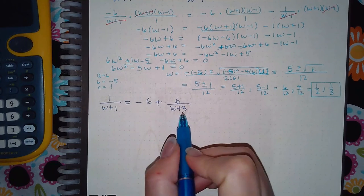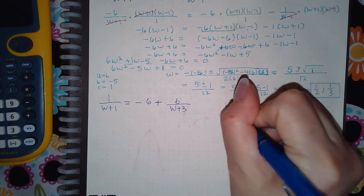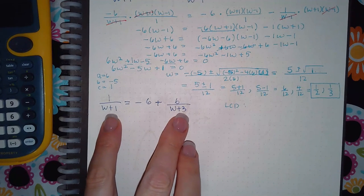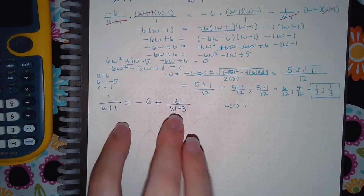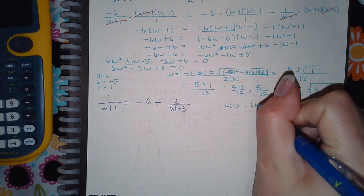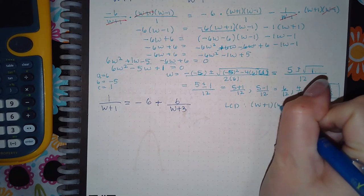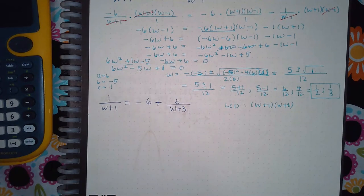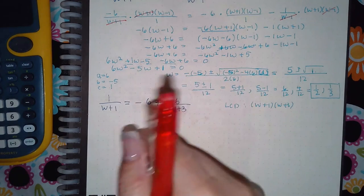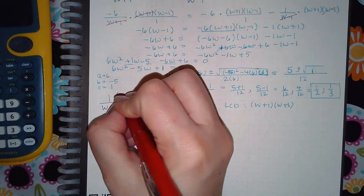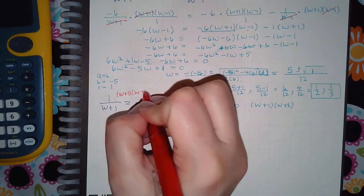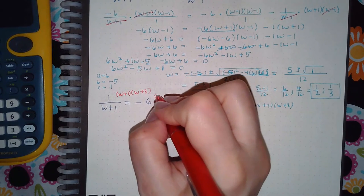So for this problem, we do have to identify the LCD again. And these two denominators are distinct. They are not the same. So we have to include both in the LCD. And so then I'm going to, instead of writing the whole problem out, because I don't have as much space as I did with the last problem, I'm just going to write it here and here.